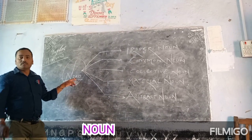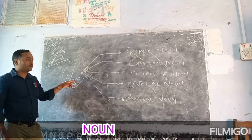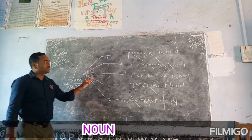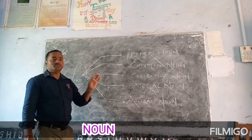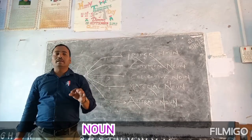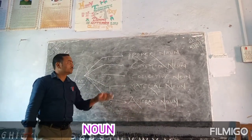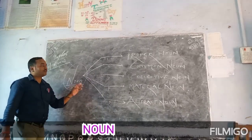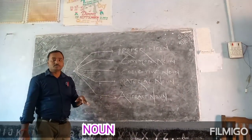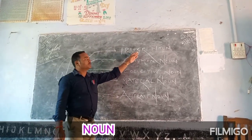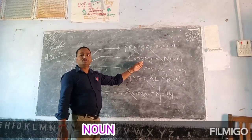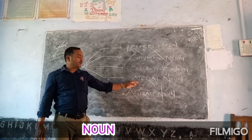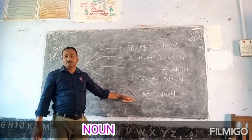Noun is an important part of English grammar. Every student must know the kinds and uses of nouns. There are mainly five kinds of nouns. They are proper noun, common noun, collective noun, material noun, and abstract noun.